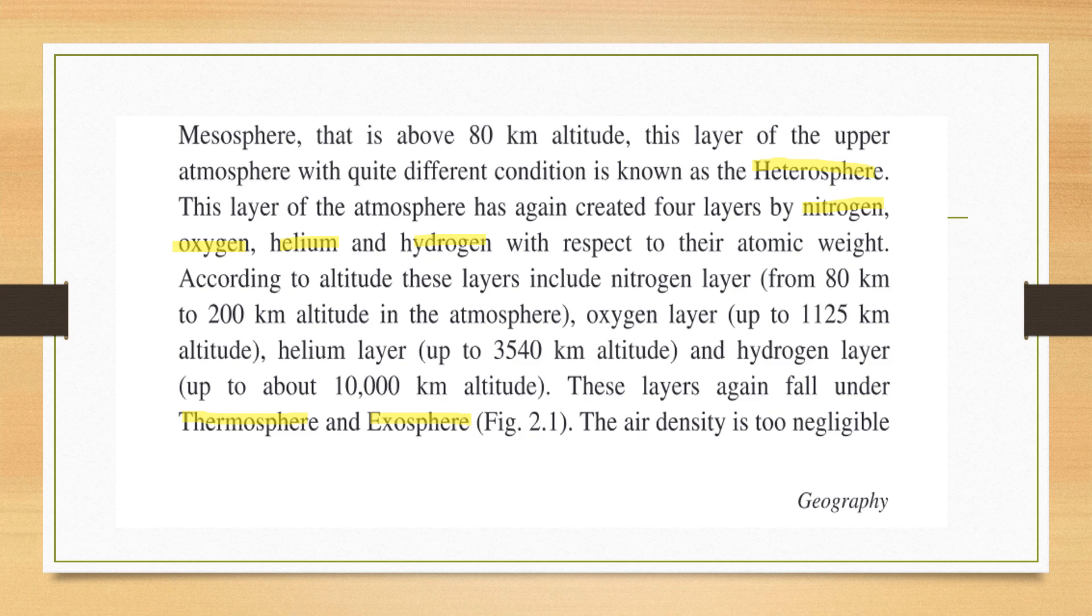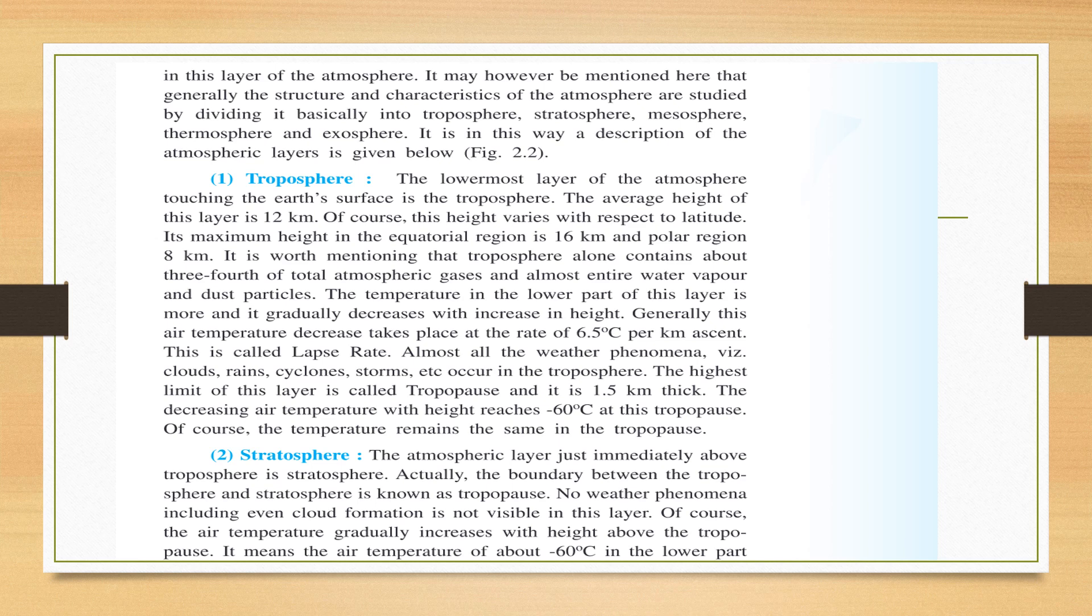The air density is too negligible in this region of the atmosphere. The air density is very, very low, very less dense there. However, it may be mentioned here that generally the structure and characteristics of the atmosphere are studied by dividing it basically into troposphere, stratosphere, mesosphere, thermosphere and exosphere. Although we have seen the various layers - homospheric layer, heterospheric layer, then heterosphere has nitrogen, oxygen, etc. layers - but that is a very advanced level of study. Simply, if we want to study on class 9 basis, we will be studying troposphere, stratosphere, mesosphere, thermosphere and exosphere. If we simply want to study according to structure and characteristics, we study these layers. So let us go through troposphere.